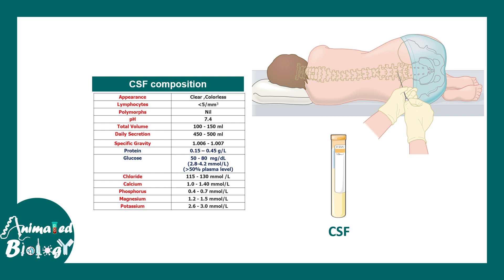Normally, CSF has this composition: it has a very small amount of protein, a substantial amount of glucose, and different concentrations of ions like chloride, calcium, magnesium, and potassium. It is also very important to note that lymphocytes are very few — only about five or fewer cells per cubic millimeter.